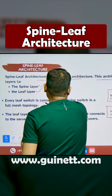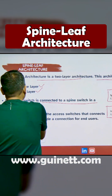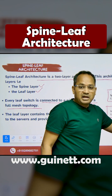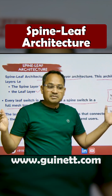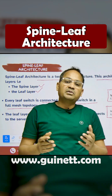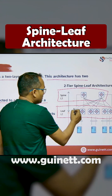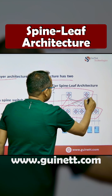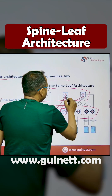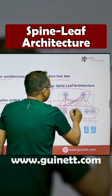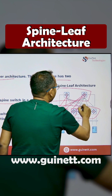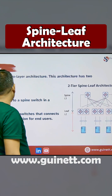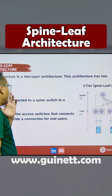Every leaf switch connected with the spine switch is a full mesh topology, meaning that leaves are going to connect with the spines in a full mesh — every device has connectivity to everyone. So they have full mesh, meaning scaling is going to happen for all devices, and that's why you can see the full mesh topology is going to be built.